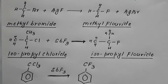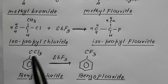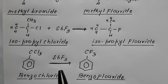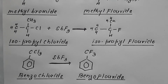Consider benzal chloride — benzene having one carbon where all 3 hydrogens have been replaced by chloride. This benzal chloride, when treated with antimony fluoride, gets converted into benzal fluoride — the chloride is being exchanged by fluoride. So the chloride compound converts into a fluoride compound. This is what the Swarts reaction is: conversion of alkyl chloride or alkyl bromide into alkyl fluoride by reaction with heavy metal fluoride.